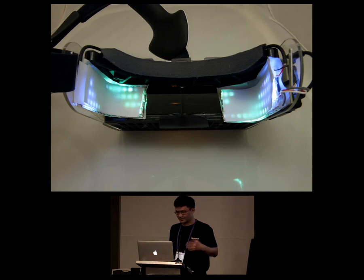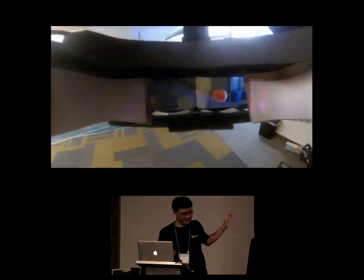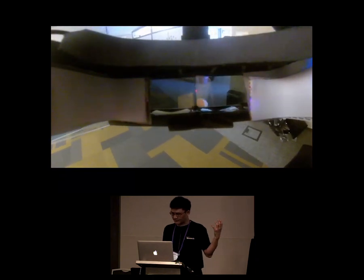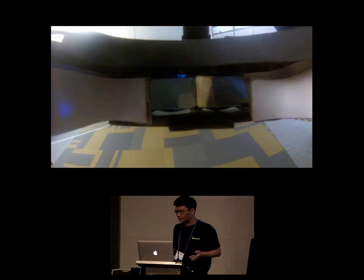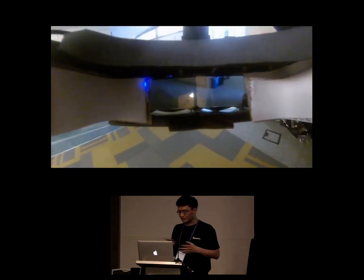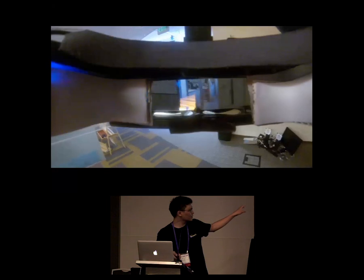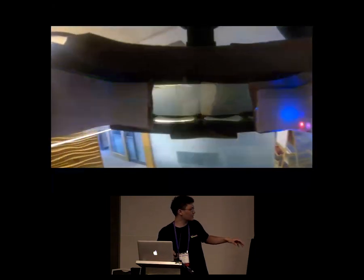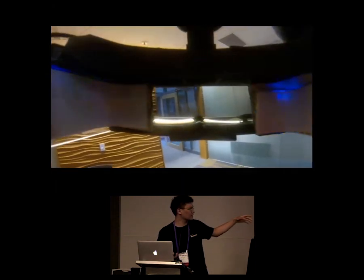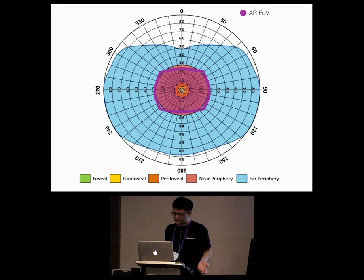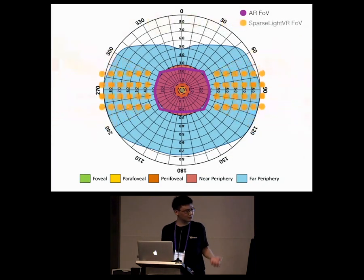We covered the LEDs with a paper diffuser instead of plastic to reduce weight and bulk. This prototype is fully self-contained — the display and LEDs are all driven off the smartphone itself, which renders everything in real time. You can see the butterflies rendered in blue and the bouncing ball in red in the periphery. With the LEDs, we achieve about 190 degrees horizontal field of view.